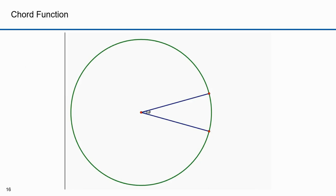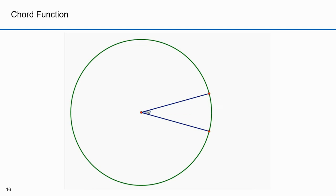I want to show you a simple geometric derivation of the chord function. Note the angle theta on this circle. The chord of theta is this line segment here — it forms an isosceles triangle. If I draw a line from the center of the circle perpendicular to the chord, it bisects the angle theta. The length of this red line segment is the sine of theta over 2. Since the perpendicular line segment bisected theta, the chord length of theta is thus 2 times the sine of theta over 2. This is true for a unit circle. If the circle had a radius r, the chord would be r times 2 times the sine of theta over 2.